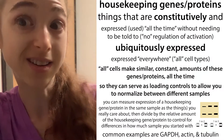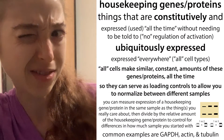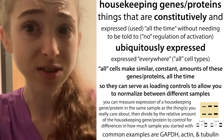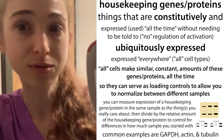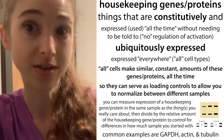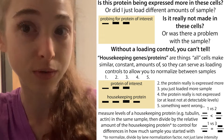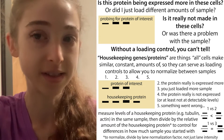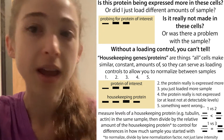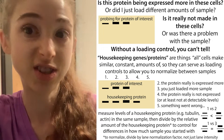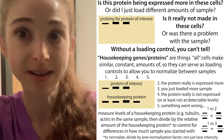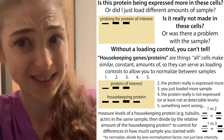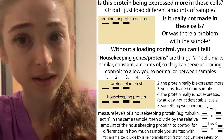Housekeeping genes or proteins are things that are constitutively and ubiquitously expressed, and they allow us to make sure we're comparing apples to apples when we're trying to measure how much of a gene is being expressed under different conditions or in different cell types. They allow us to make sure that we're not just thinking that something is being made more when really we just loaded more of the sample.